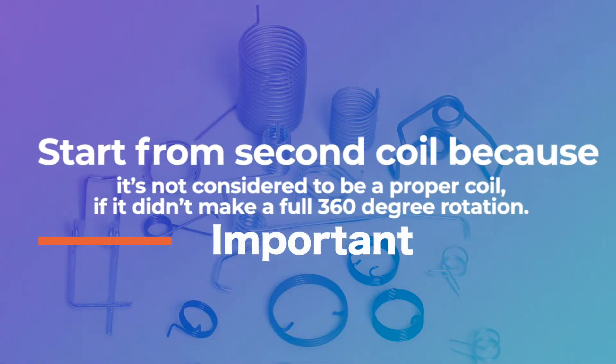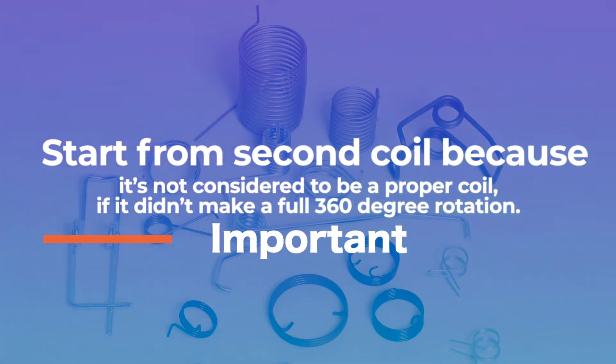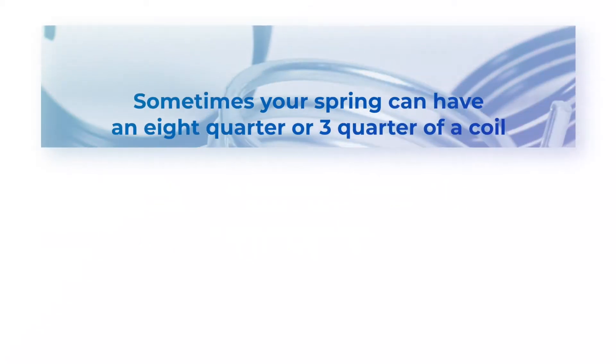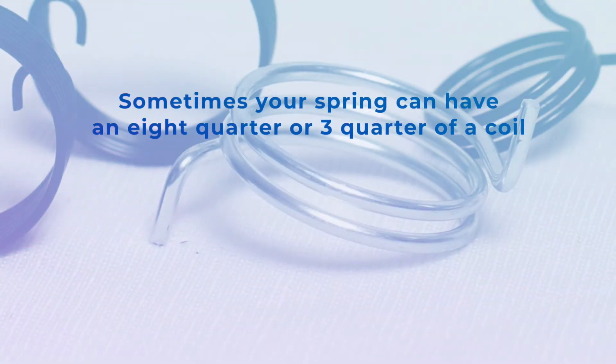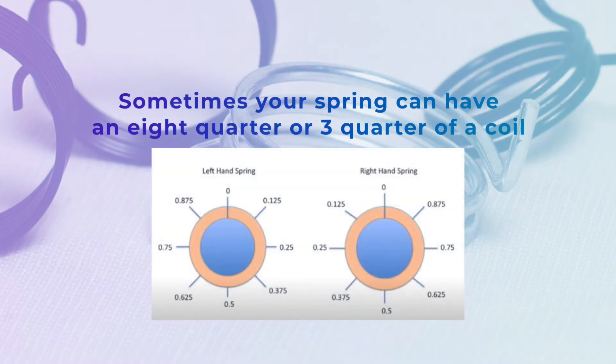Now time to count the number of coils, this is very important. Start from the second coil because it's not considered to be a proper coil if it didn't make a full 360 degree rotation. Sometimes your spring can have a quarter of a coil or three quarters of a coil.